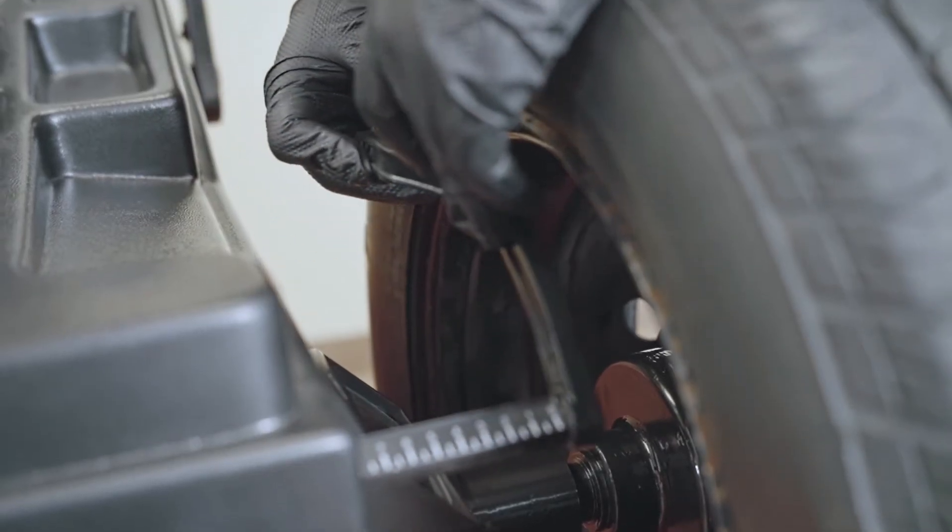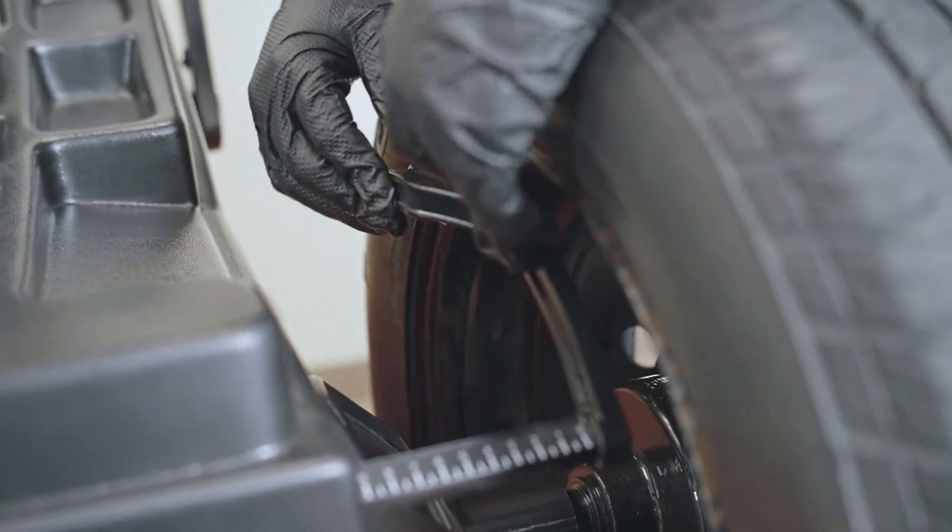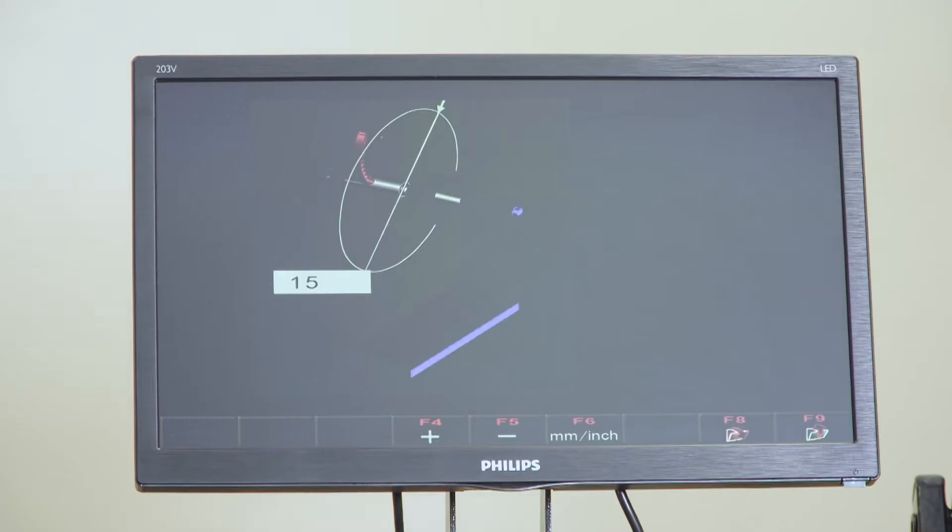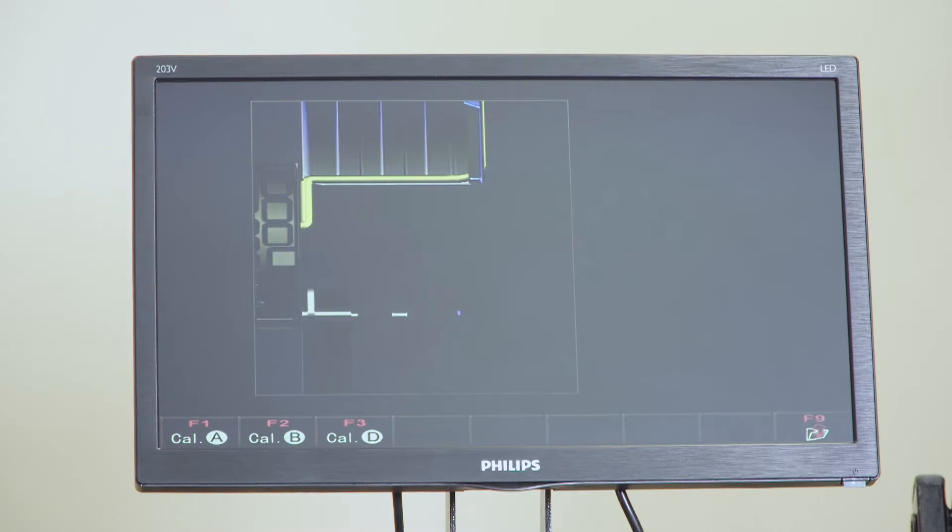We'll take the distance ruler, rest it on the edge of the rim, and hit F8 to confirm. Now all the calibration is done. We'll hit F9 to exit.